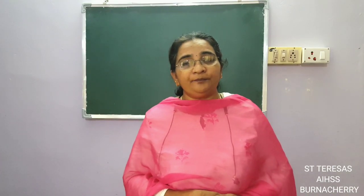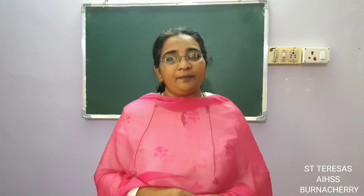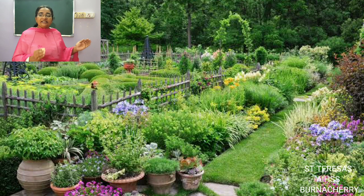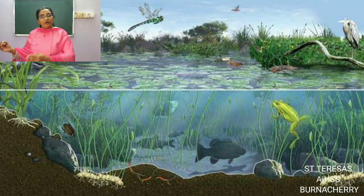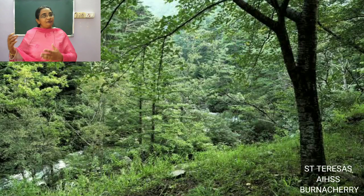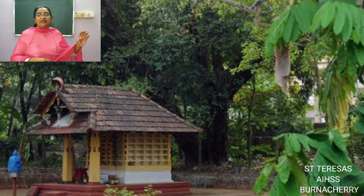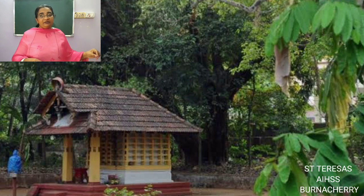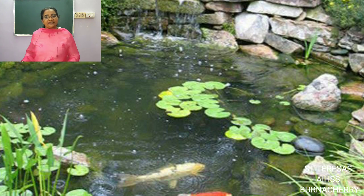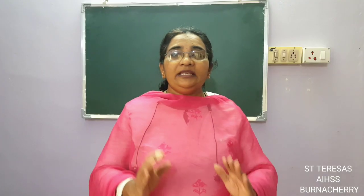Ecosystems are all around us: your garden at home, a nearby pond or stream, a forest, or sacred groves — the 'pambangava' area in old traditional houses with a small temple. Even a field or a small pond in your house with fish, aquatic plants, and surrounding plants is an ecosystem.